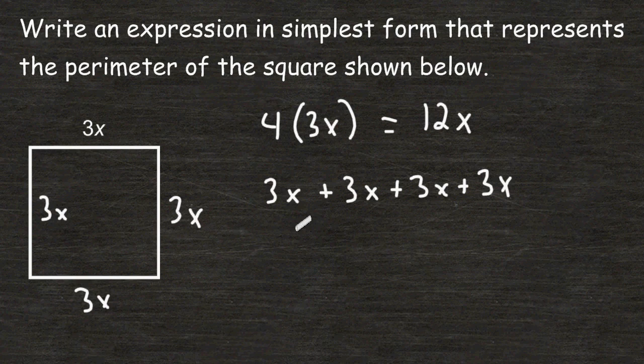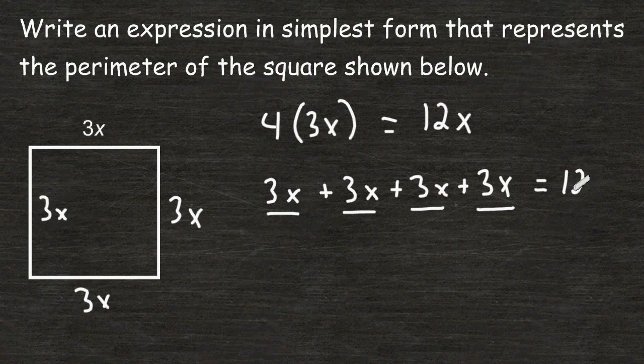Now we can simply combine like terms. 3x plus 3x is 6x, plus 3x more is 9x, plus 3x more is 12x. So the expression that represents the perimeter of the square shown is equal to 12x.